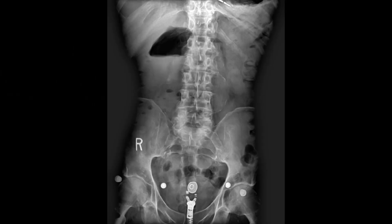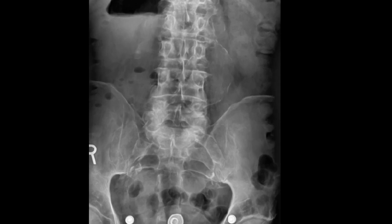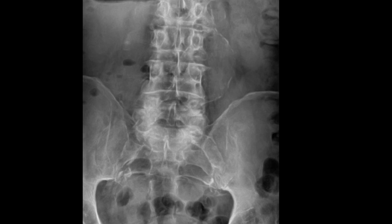Here is a frontal lumbar radiograph for an individual presenting with lower back pain. You should notice a thin curvilinear cyst wall calcification within the expected area of the abdominal aorta. Anytime you see this on a frontal image, double-check the measurements to assess for dilatation of the abdominal aorta. Any enlargement over 5.5 centimeters should be assessed appropriately with ultrasonography or CT.